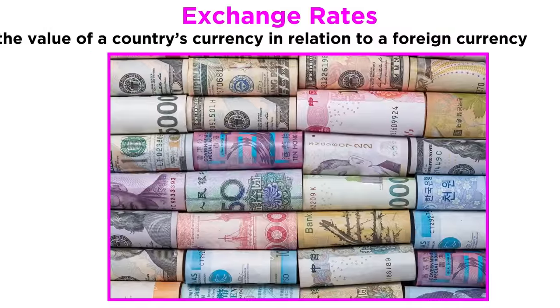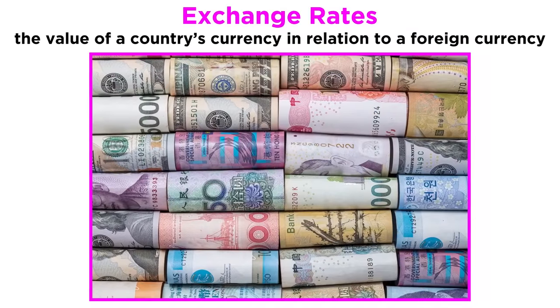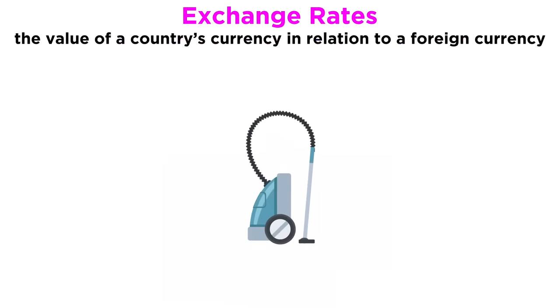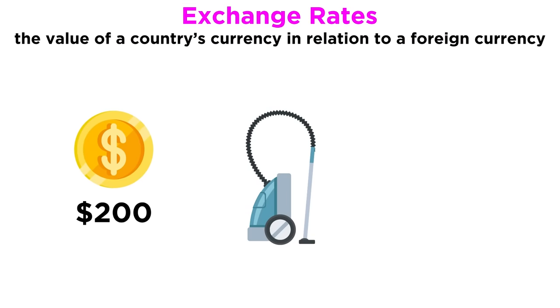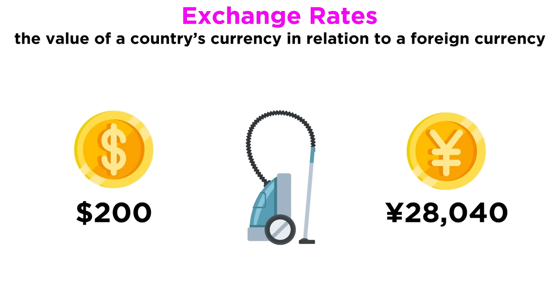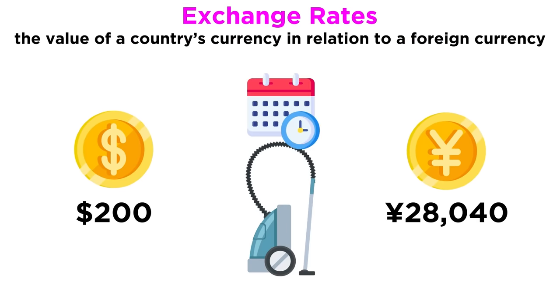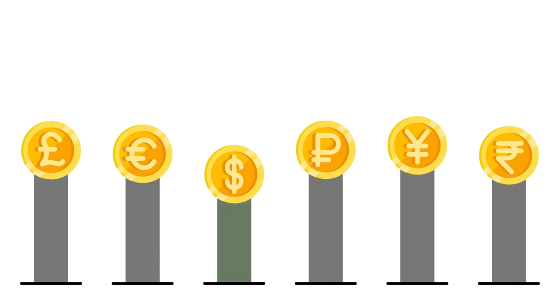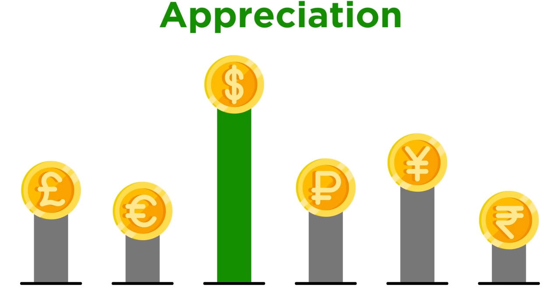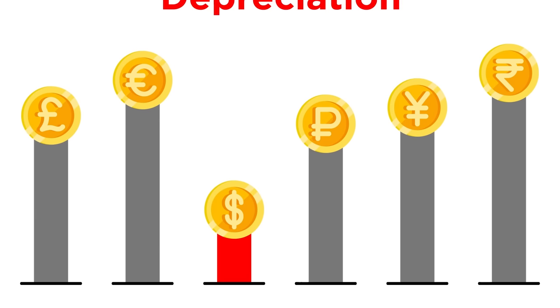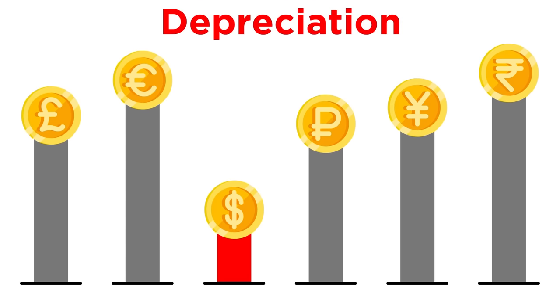First of all, the value of a country's currency in relation to a foreign currency is called the exchange rate. If you understand exchange rates, you can convert prices in one currency to prices in another currency. Exchange rates change daily, but these days they are easy to keep track of. A currency's value goes up or down in relation to other currencies. An increase in the value of currency is called appreciation, and a decrease in its value is called depreciation.